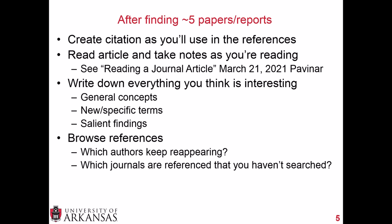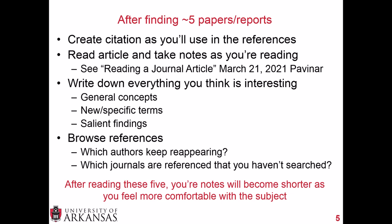Read the article and take notes as you're reading. Write down everything you think is interesting: general concepts, new and specific terms, salient findings — just write down everything. This is why the first couple of articles take a while, because everything is new and everything seems important. But as you get more familiar, reading becomes quicker. Also browse the references of these five to seven papers, because this will help you see which authors keep reappearing, allowing you to do targeted searches on authors as well as your topic. Check out which journals are referenced that you haven't searched yet — if you see one appearing regularly in your subject area, do a more targeted search there. After reading these first five to seven, your notes will become shorter as you feel more comfortable with the subject, and it accelerates and snowballs on itself.